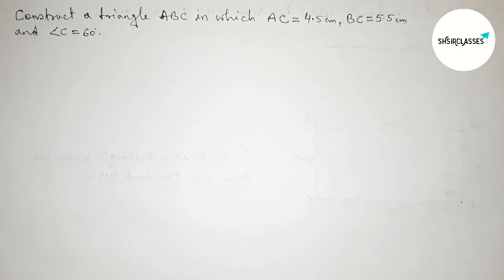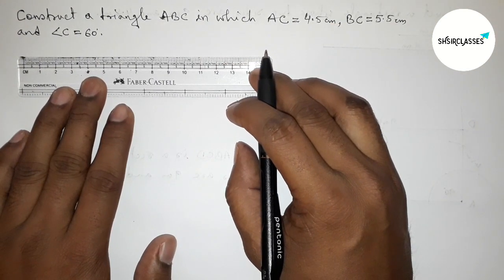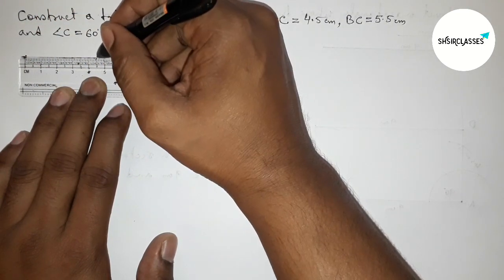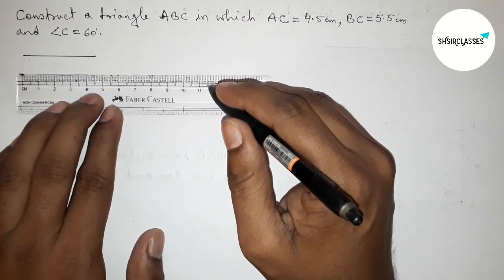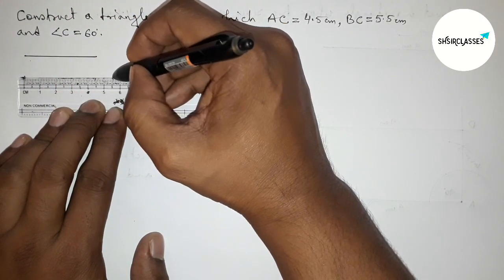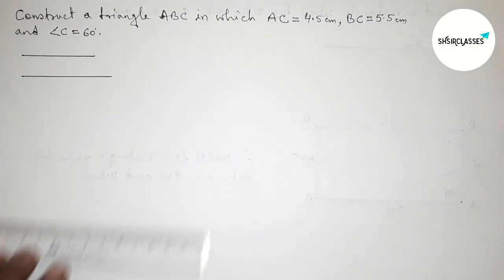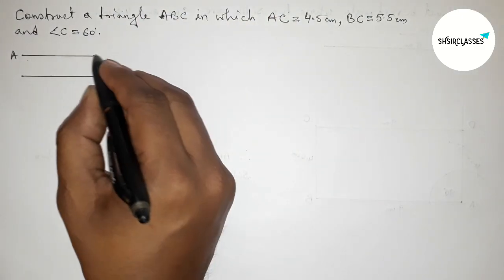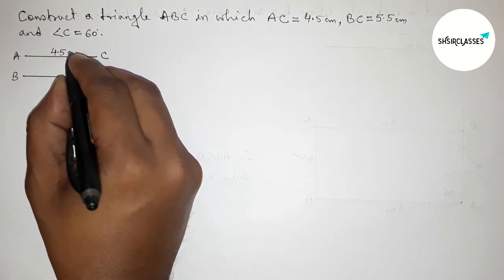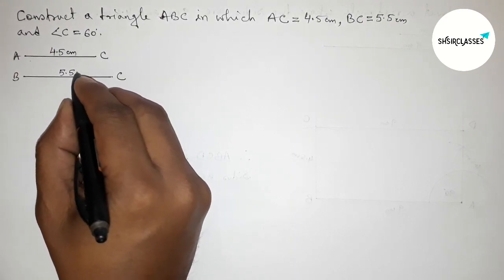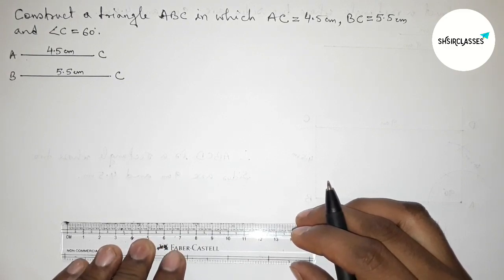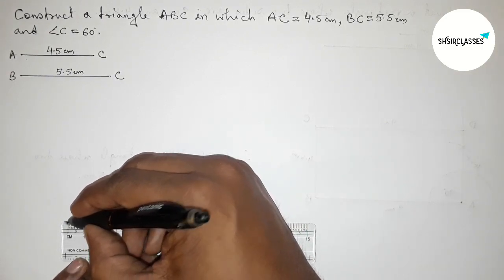First of all, let us draw the two given sides: 4.5 centimeters and 5.5 centimeters. Drawing 4.5 centimeters — this is the 4.5 centimeter segment. Now drawing another 5.5 centimeter line segment. So AC equals 4.5 centimeters and BC equals 5.5 centimeters.